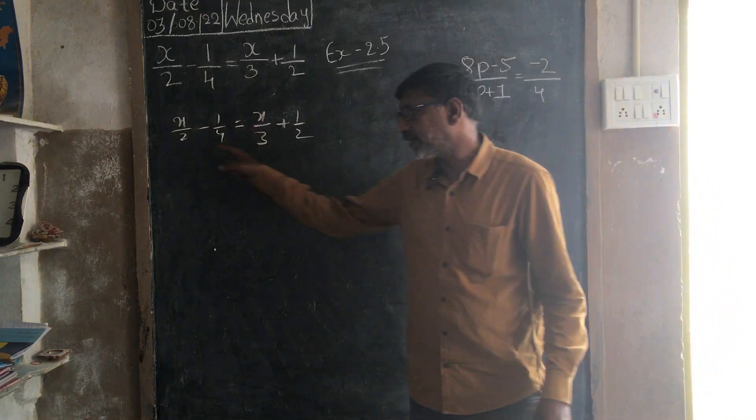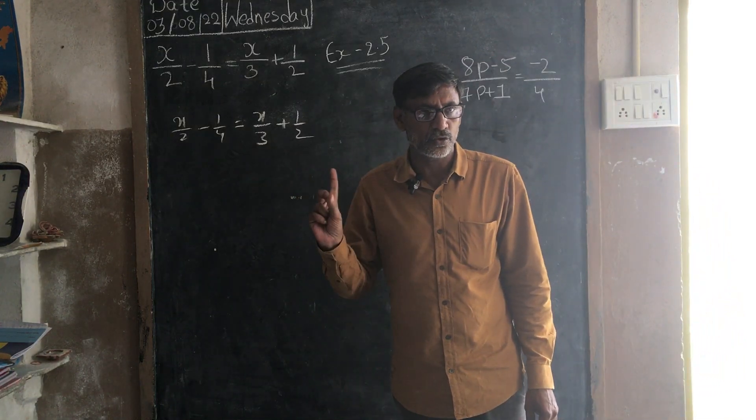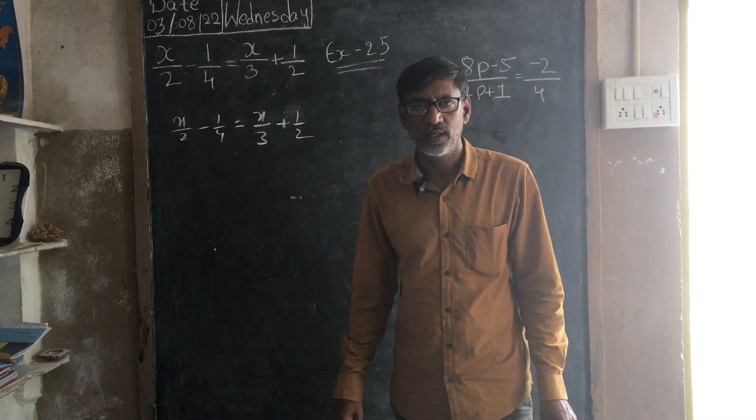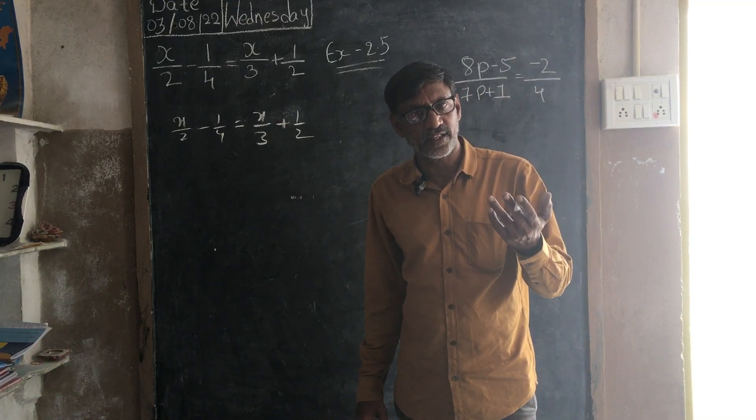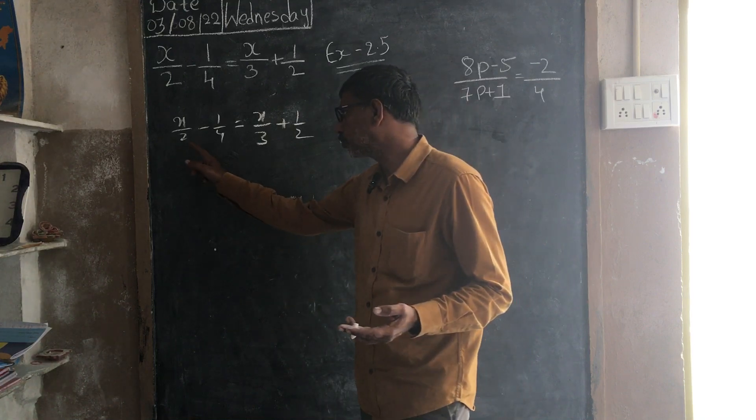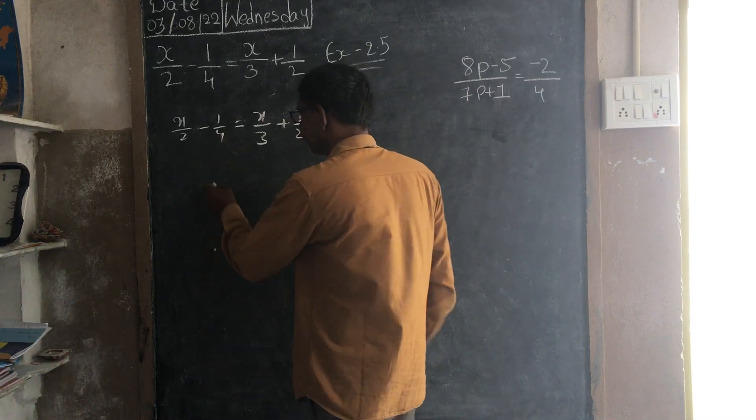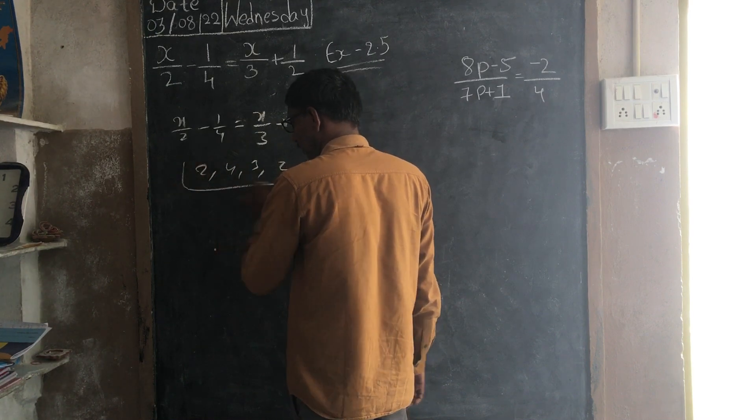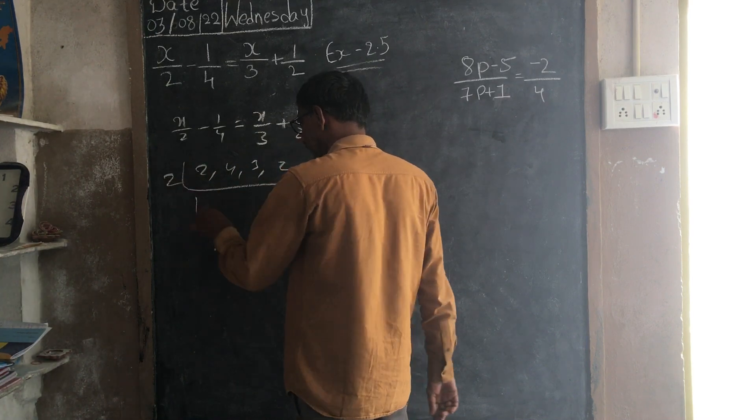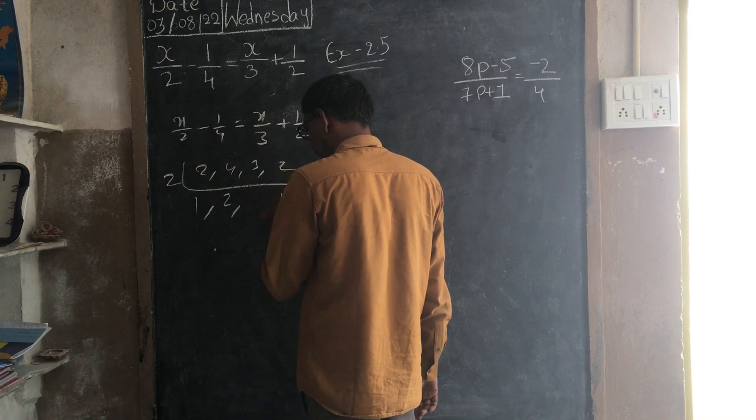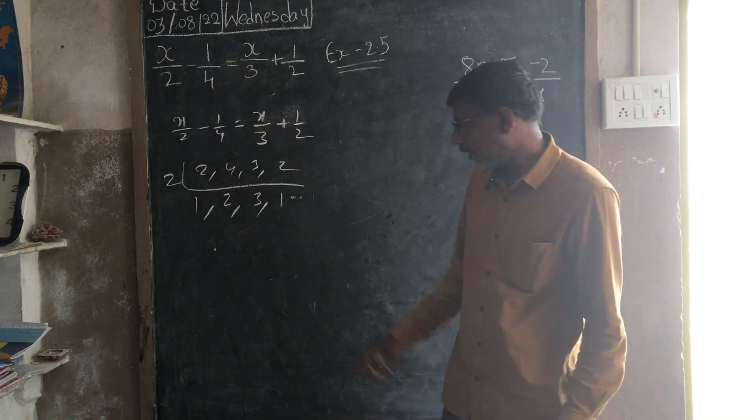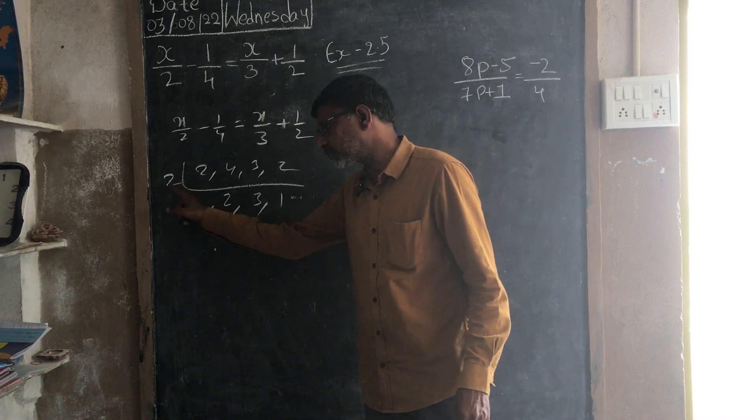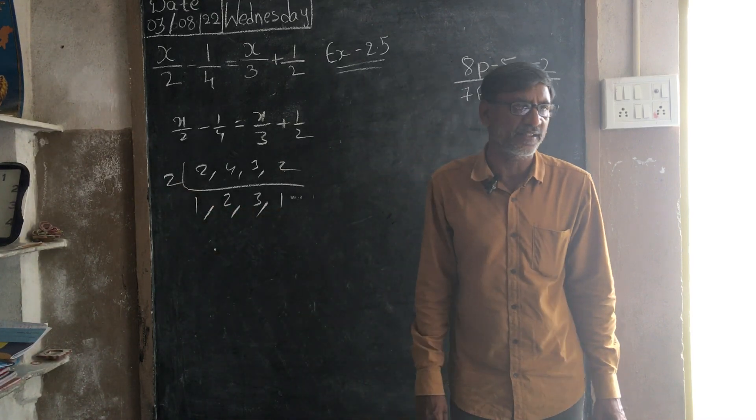You see all the denominators, here 2, 4, 3 and 2. These are my denominators. I will find LCM of these 2, 4, 3 and 2. Taking 2, 2 1s and 2 2s and 2 1s, 3 as it is. We know, right? Now, there is no common factor between the 2 3s as 6, 2 6s as 12. 12 is my LCM.